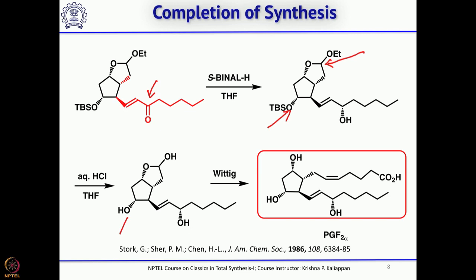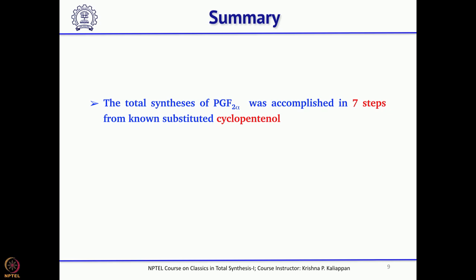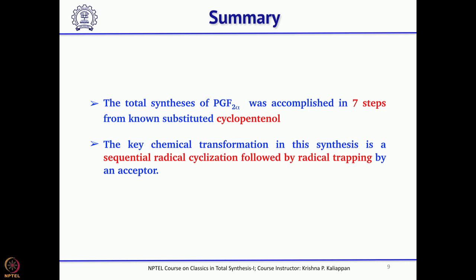Overall, the Stork synthesis was achieved in only 7 steps, starting from the TBS-protected cyclopentenol (a known compound from cyclopentadiene). The key step was the 5-exo radical cyclization followed by trapping of the radical with an acceptor.